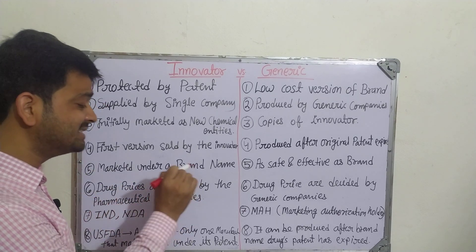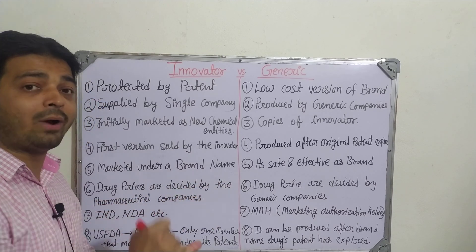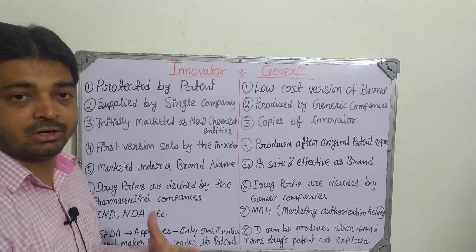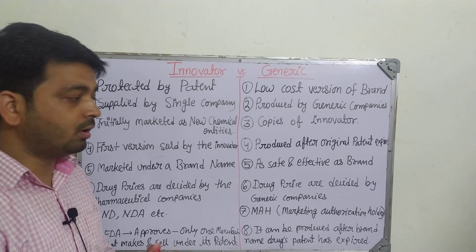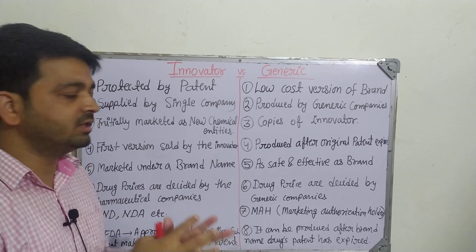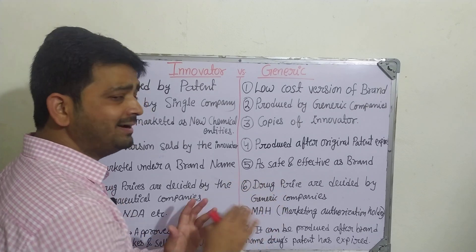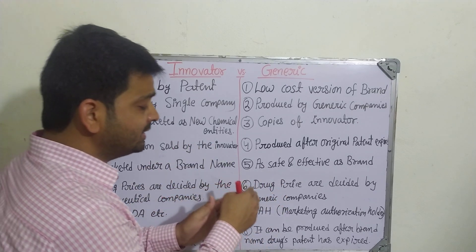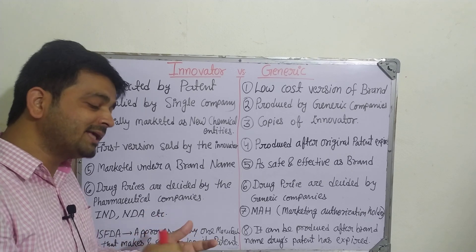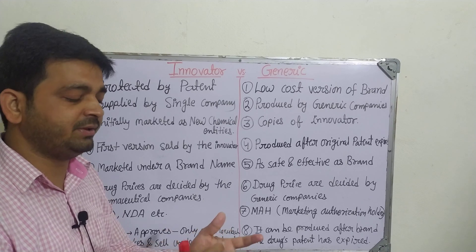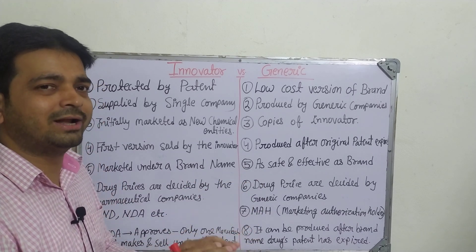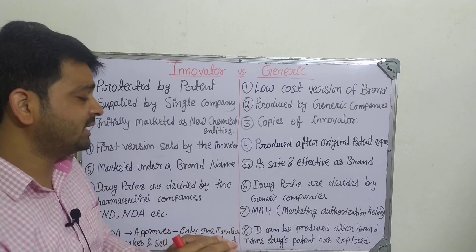The sixth point: for the branded drug, prices are decided by the pharmaceutical company that has patented and manufactured first. They calculate the cost of discovering the molecule, completing pre-clinical and clinical trials, and all related expenses — then decide the price. Whereas for the generic drug, prices are decided by the generic companies. Since the patent is already expired, only the actual manufacturing cost — excipients, binders, dosage form, whether solid, liquid, or parenteral — is factored in. That is what makes it an affordable or lower price.